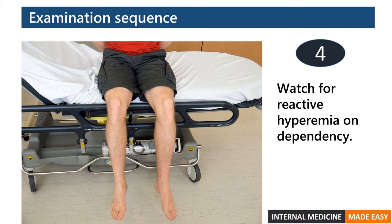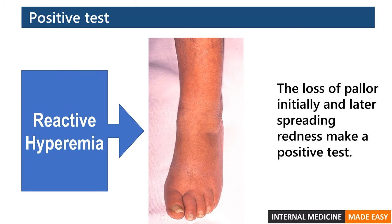Lastly, watch for reactive hyperemia on dependency. The loss of pallor initially and later spreading redness make a positive test. The leg initially turns a bluish color due to the passage of deoxygenated blood through the ischemic tissue. Then the leg will become red due to reactive hyperemia secondary to post-hypoxic arterial dilatation, driven by anaerobic metabolic waste products.